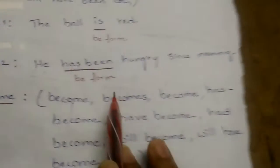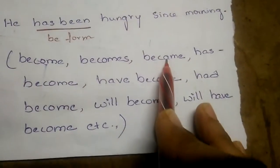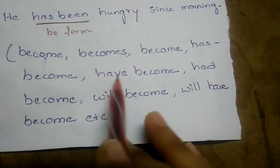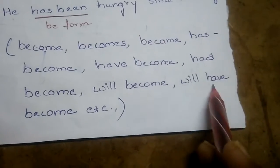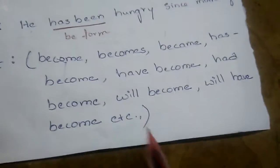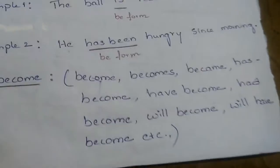Become, becomes, became, has become, have become, had become, will become, will have become, etc. - these are all, you know, act as linking verbs only.